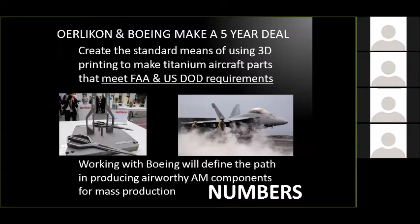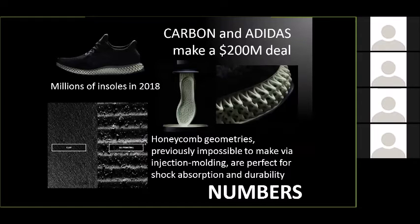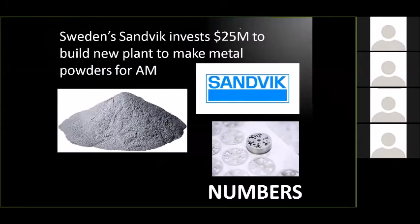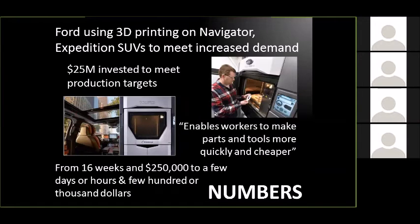Companies are making deals left and right — for example, teaming up with Boeing to do new standards for DOD and FAA. The deal between Carbon and Adidas to print the mid-soles, bringing in the speed of Carbon's CLIP technology and the mechanical design of honeycomb systems, is a huge deal that will allow them to customize shoes while in production. We're following all this money: $25 million invested in a plant to produce metal powders, $60 million in Pittsburgh to scale up another metal powder plant. We're seeing the metal powder money going crazy to scale up. Porsche, Bugatti, and Ford are all talking about it — investments left and right.